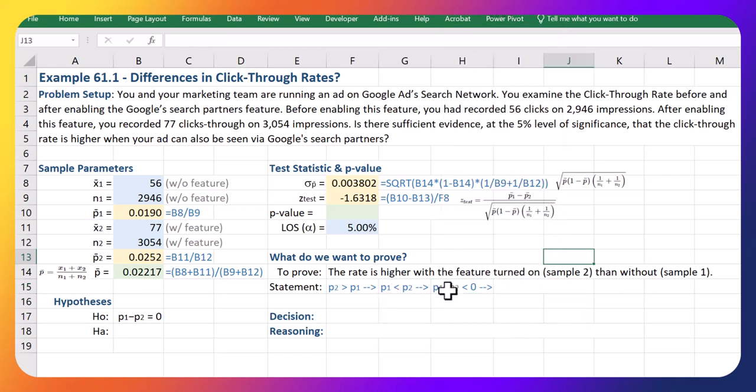Keeping going, then that gives us that if we take p1 minus p2, it should be less than zero if I move this p2 to this side. What does that mean for us? That means that we are performing a left-tailed test.